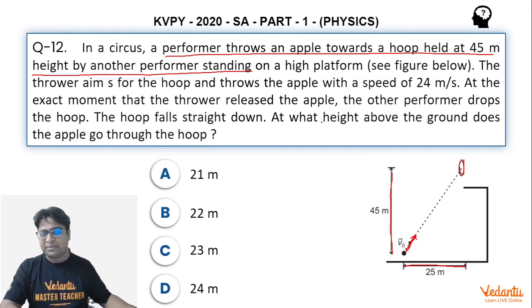A person targets this hoop and throws an apple, and at the same time the hoop is being released so the hoop will begin to fall down. The apple will not go on a straight line trajectory, it will follow a parabolic trajectory somewhat like this, but when the hoop would be somewhere here the apple would pass through the hoop.